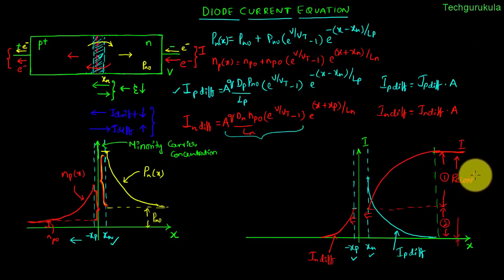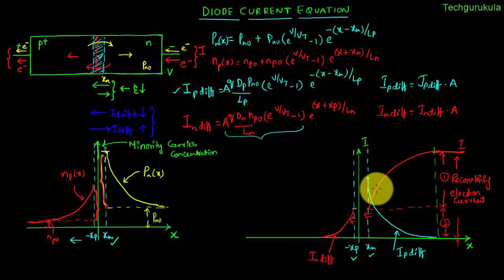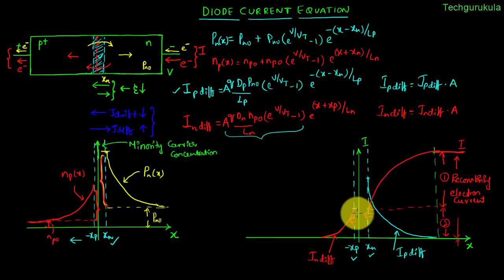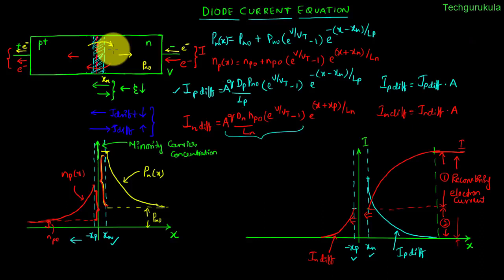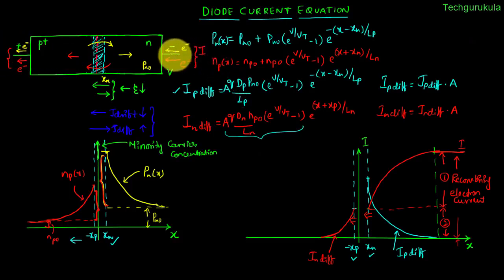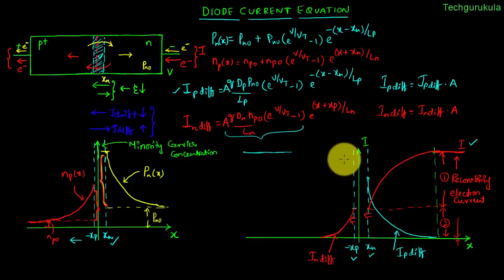We can say the first component is the recombining electron current — the number of electrons flowing per unit time to actually recombine with minority carrier holes on the n-side — and the second component is the electrons flowing per unit time to get injected across the junction onto the p-side, which eventually contribute to diffusion current in the p-side. Similarly, the number of holes coming into the p-side from the supply equals the number of holes to recombine with injected electrons, plus the number of holes to be injected across the junction. The number of holes supplied is equal to the number of electrons taken out, which equals the number of electrons supplied into the p-n junction diode, so the current at one end equals the current at the other.